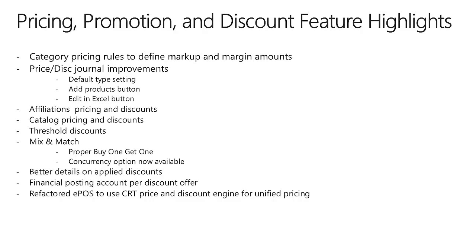With mix and match, we now have a proper buy one, get one free. In AX 2012 R2, prior to CU7, when you added the free item, we took the amount of that free item and distributed it against all of the items on the order. With CU7 and AX 2012 R3, the buy one get one was changed to display $0 on the free item and 100% on all of the other items. Previously, mix and match was excluded from the concurrency model, but in AX 2012 R3, mix and match was added to that concurrency model.